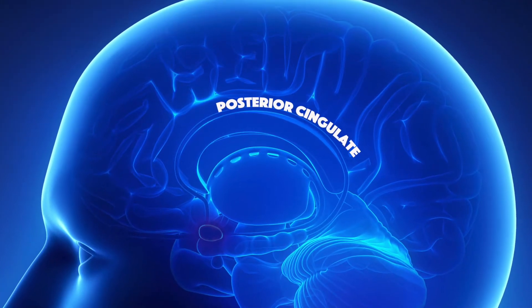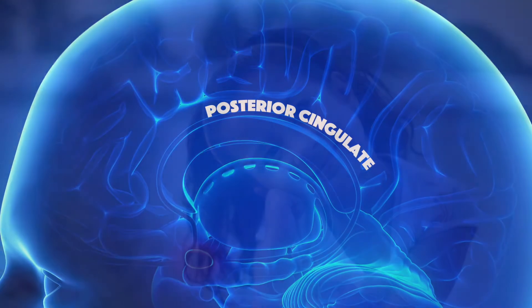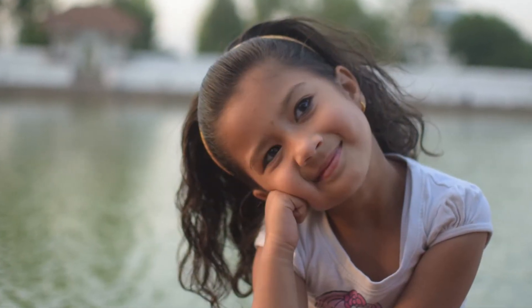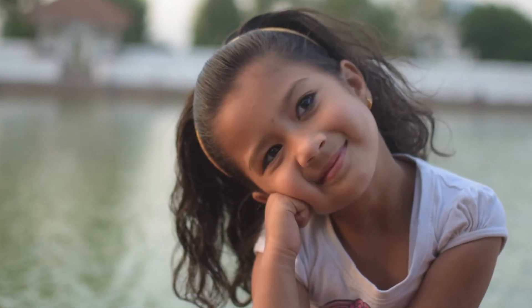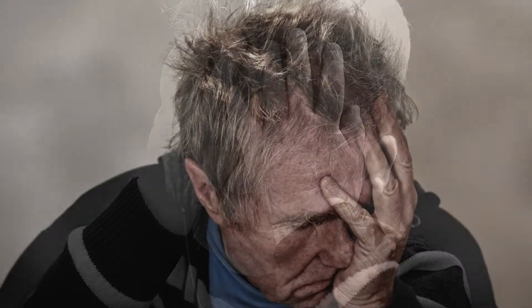The posterior cingulate cortex is a central part of the default mode network. The default mode network is active during mind-wandering, self-referential thinking, and when a person is not actively performing a specific task. Healthy activity of the DMN includes introspection, daydreaming, imagining scenarios, and revisiting decisions from the past to help better understand and imagine the future. Excessive mind-wandering may draw us to ruminate over past problems or have anxiety about the future.